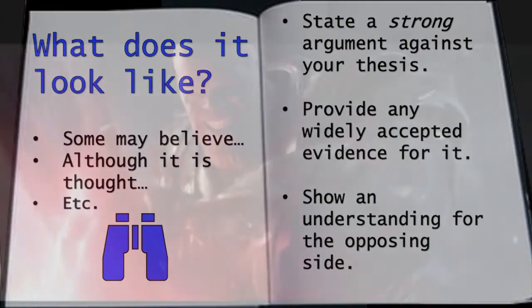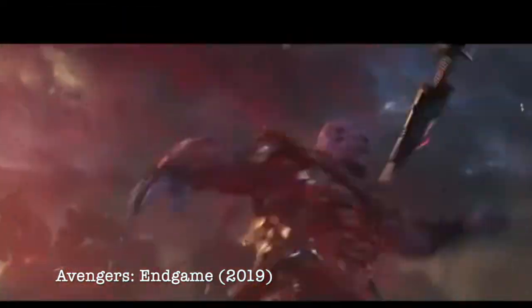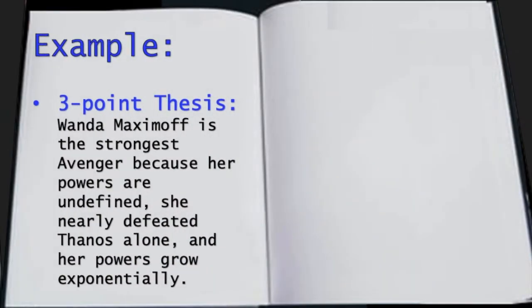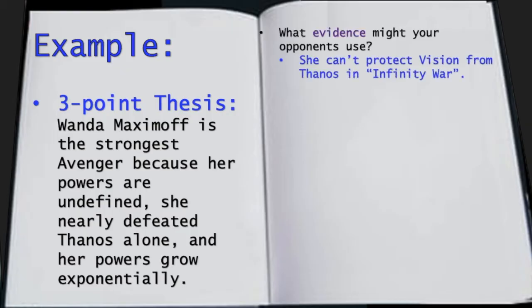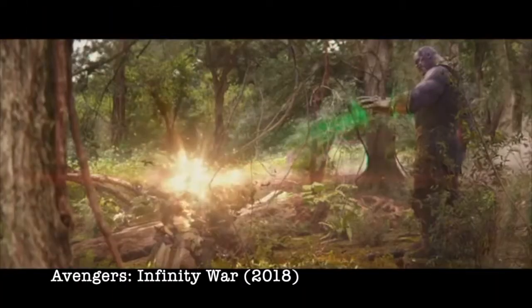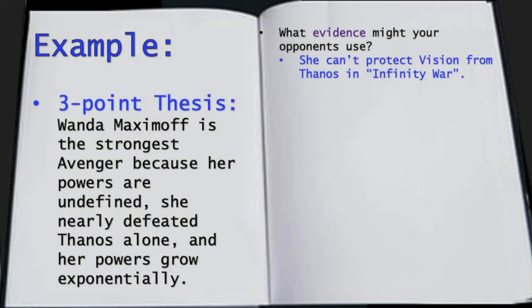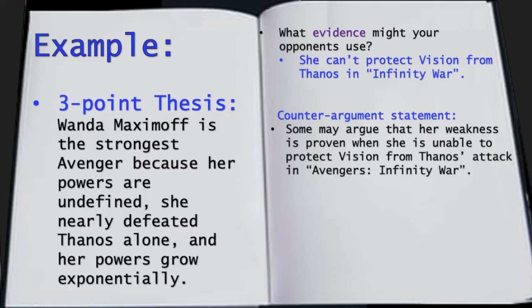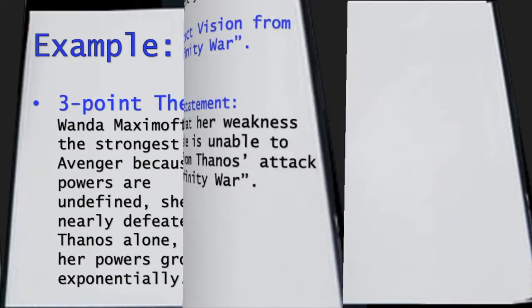Let's look at our familiar example. So you ask yourself, what evidence might your opponents use, and you come up with that she can't protect Vision from Thanos in Infinity War. So you state this argument in your essay, and then it's time to disprove it.